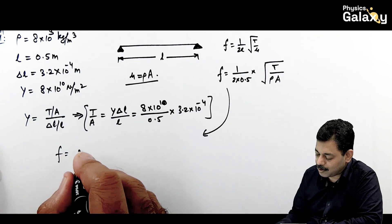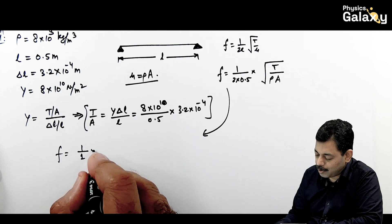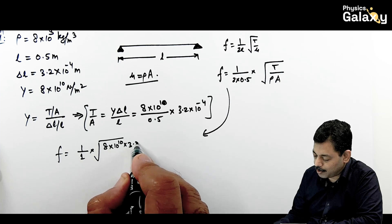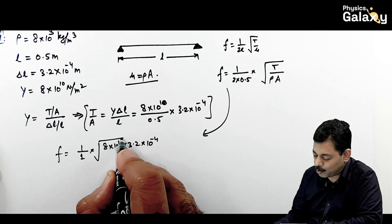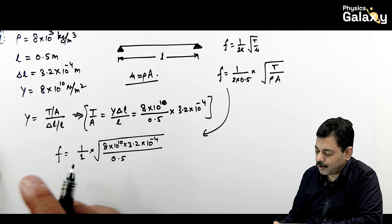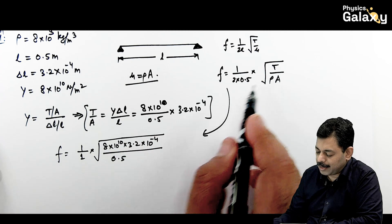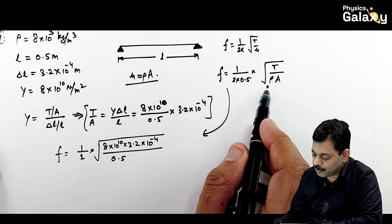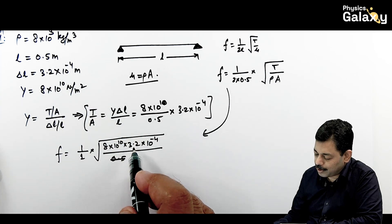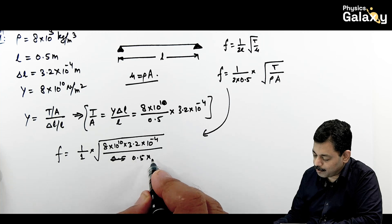1 by 1 multiplied by root of T by A is 8 into 10 to power 10 into 3.2 into 10 to power minus 4 by 0.5 multiplied by density. This is not 0.5, this density we need to write. T by A ka value already I've put. This is 0.5 multiplied by 8 into 10 to power 3.